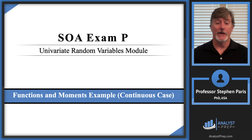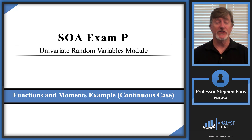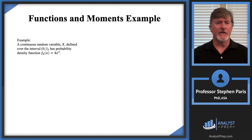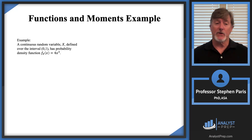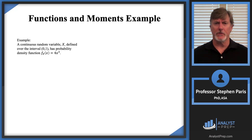In this video we're going to do an example of how to calculate some functions and moments in a continuous case. We've got a continuous random variable X defined over the interval from 0 to 1, and it has probability density function given by f(x) = 4x³. This is generally the setup you'll have with continuous random variables — oftentimes you'll just be told what the density function is.